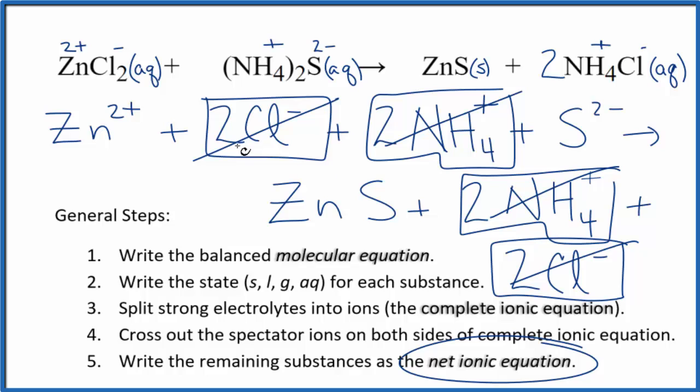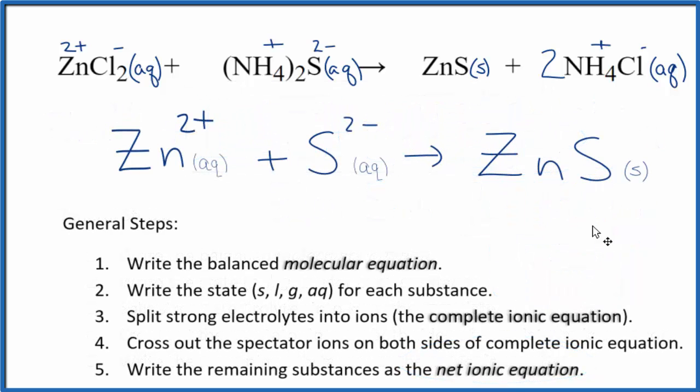I'll clean this up and write the states. We'll have our net ionic equation. So this is the balanced net ionic equation for zinc chloride plus ammonium sulfide. You'll note, charge is balanced. 2+, 2-. Net charge is zero here in the reactants. This is a neutral compound in the products. Net charge is zero. So we have the same charge on each side. If you count the atoms up, they're balanced as well.